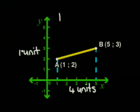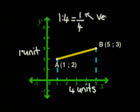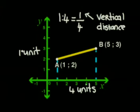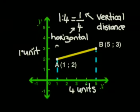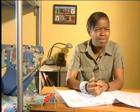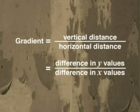But how do you plan to write it down? I suppose we could write it like the slopes on the signs, like 1 to 4. Yes, but let me show you another way to write this. When you write 1 to 4, it is the same as 1 over 4, or 1 divided by 4. The numerator, or top number, is the vertical distance and the denominator, or bottom number, is the horizontal distance. The vertical distance is the difference between the y values and the horizontal distance is the difference between the x values, which means the gradient is the difference in the y values divided by the difference in the x values.